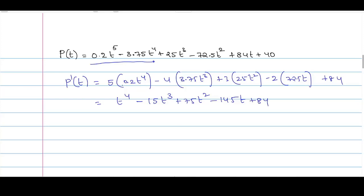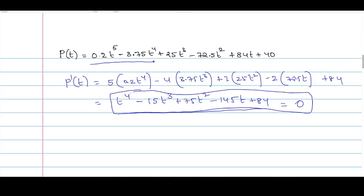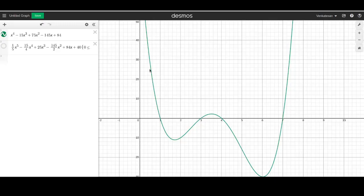You can actually plot this polynomial on Desmos and identify the points at which it touches the x-axis, or use the trial and error method to find the roots of this polynomial equation. Let us plot this polynomial in Desmos and find the roots. This is the graph of P'(t). The graph touches the x-axis at points (1, 0), (3, 0), (4, 0), and (7, 0).